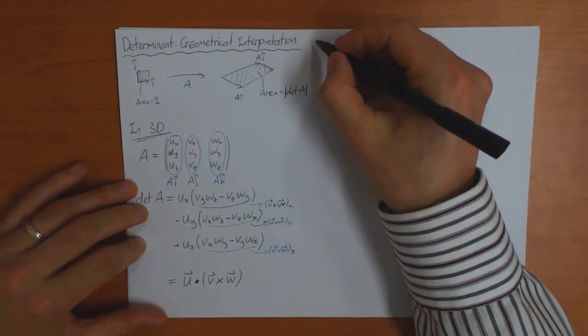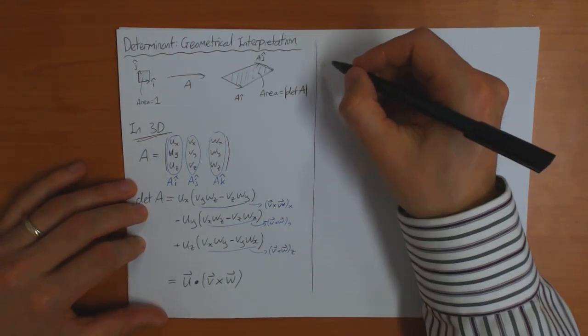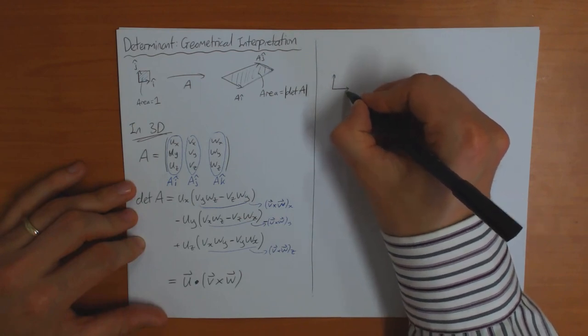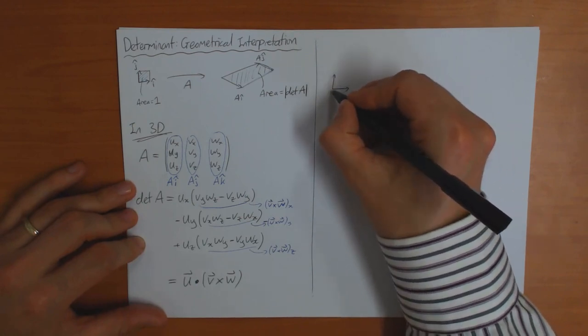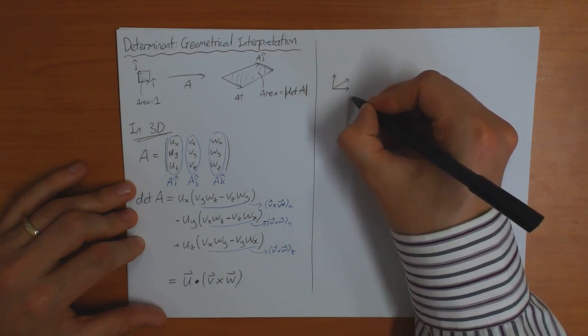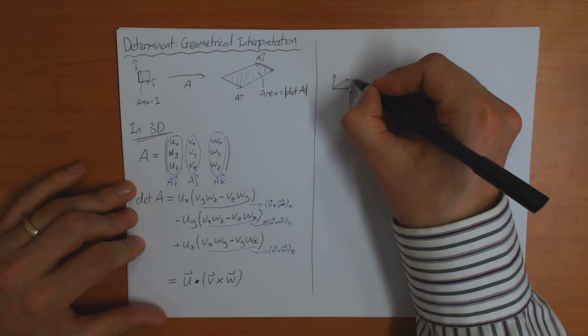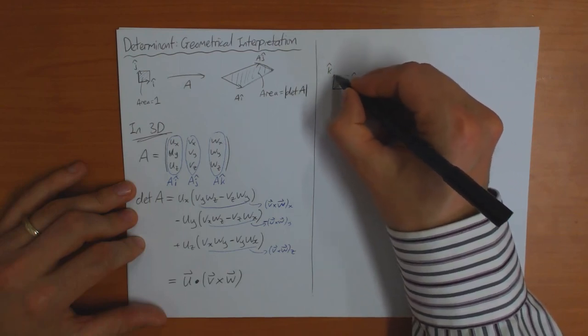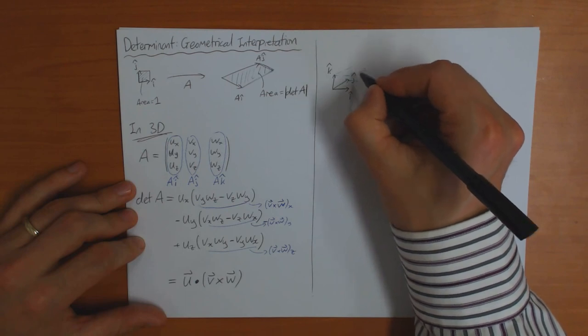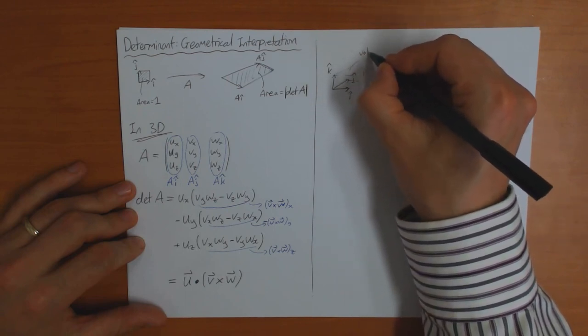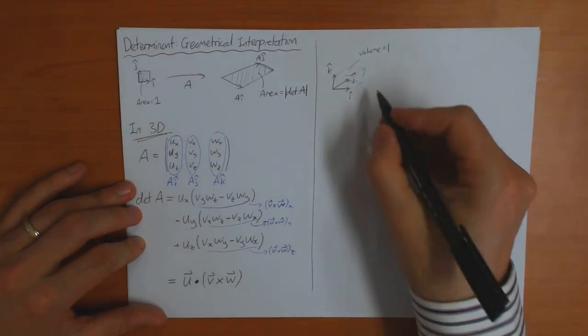So if we try and think about what this looks like as a picture, I started out with my three basis vectors like this. So this is I and J and K. And if I make a cube of these vectors here, then the volume of this cube is equal to one.